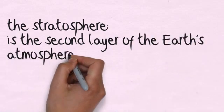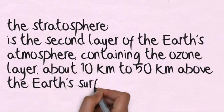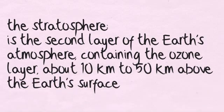The stratosphere is the second layer of the Earth's atmosphere, containing the ozone layer and that's about 10km to 50km above the Earth's surface.